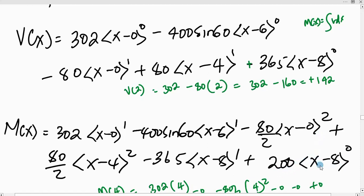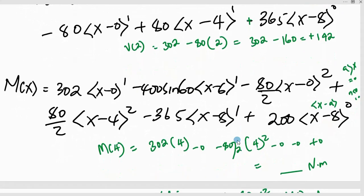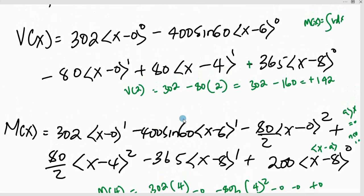This 200 times x minus 8 is because the concentrated moment acts at distance x equal to 8. The distance from the section would be x minus 8 to power 0 because it is a moment. If we were looking at the shear force equation, we would have 200 times x minus 8 to power negative 1, but that would become 0 because where you have a greater than x, that function will be 0. Where you have any less than 0, that one also reduces to 0.